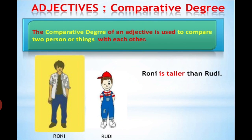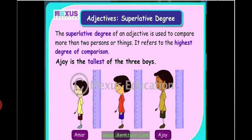Next is comparative. The comparative degree compares two persons or things. In this case, one thing is compared with two or more. And superlative: like Ajay is the tallest of the three boys. From three, Ajay is the tallest of the three boys.